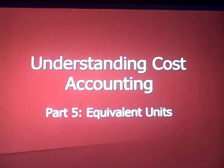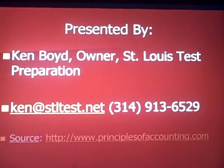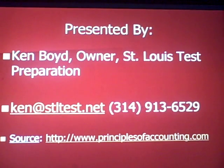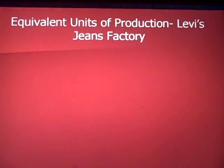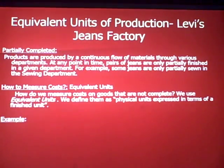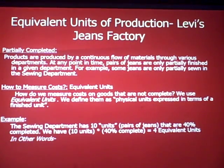Understanding Cost Accounting Part 5: Equivalent Units. This is Ken Boyd, the owner of St. Louis Test Preparation. You'll see our email address and phone number listed, and the source for our presentations is a good website, Principles of Accounting — this happens to be from Chapter 20. We're in the middle of cost accounting, and we're going to a new term: Equivalent Units of Production. I'm going to continue to use the Levi jeans factory as my example.